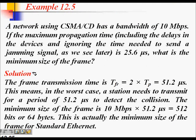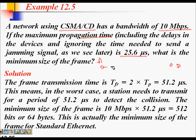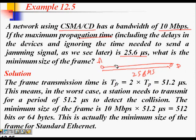Let's work through a problem to clarify the concept. A network using CSMA/CD has a bandwidth of 10 Mbps. The maximum propagation time is 25.6 microseconds — meaning from A to the farthest node, the signal takes 25.6 microseconds. What is the minimum size of a frame?